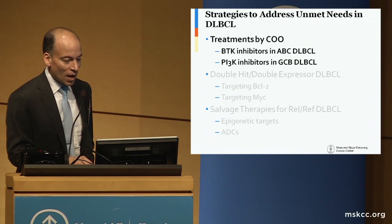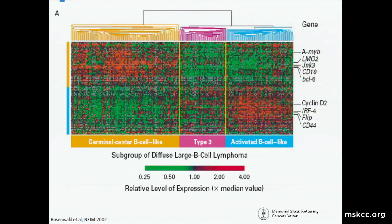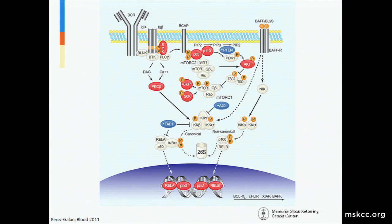Starting with the cell of origin, which you've already heard a lot about today: the original Stout group paper in 2002 showed us by an unsupervised analysis that there were patients who fell in two buckets — either the germinal center-like or the non-germinal center-like, which was further divided into an unclassifiable type and an activated B-cell type. These profiles mirrored what was seen in natural physiology, and I want to flash up a diagram to illustrate one of the differences we've noticed between those two cells of origin.